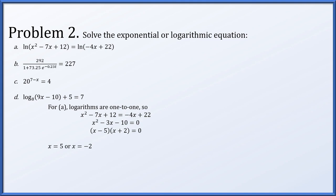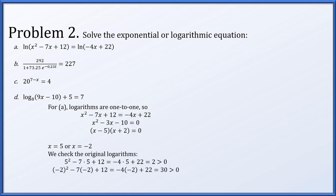Because we started with a logarithmic expression, we check for domain violations. Plugging x equals 5 into both logarithm arguments gives positive 2 in each case, and plugging in x equals negative 2 gives positive 30. Both values are valid, so both x equals 5 and x equals negative 2 are solutions.